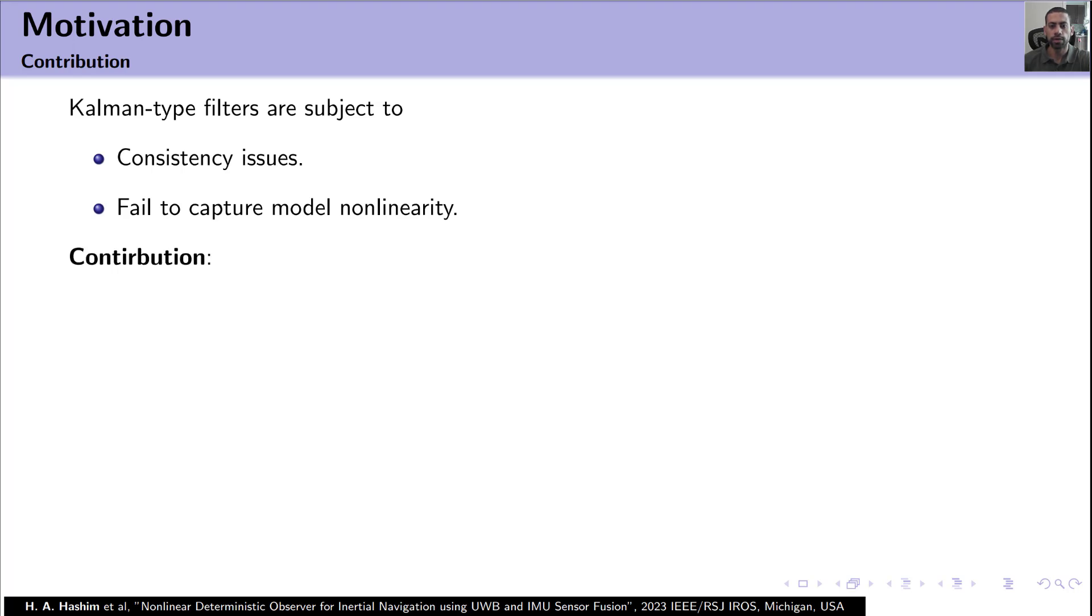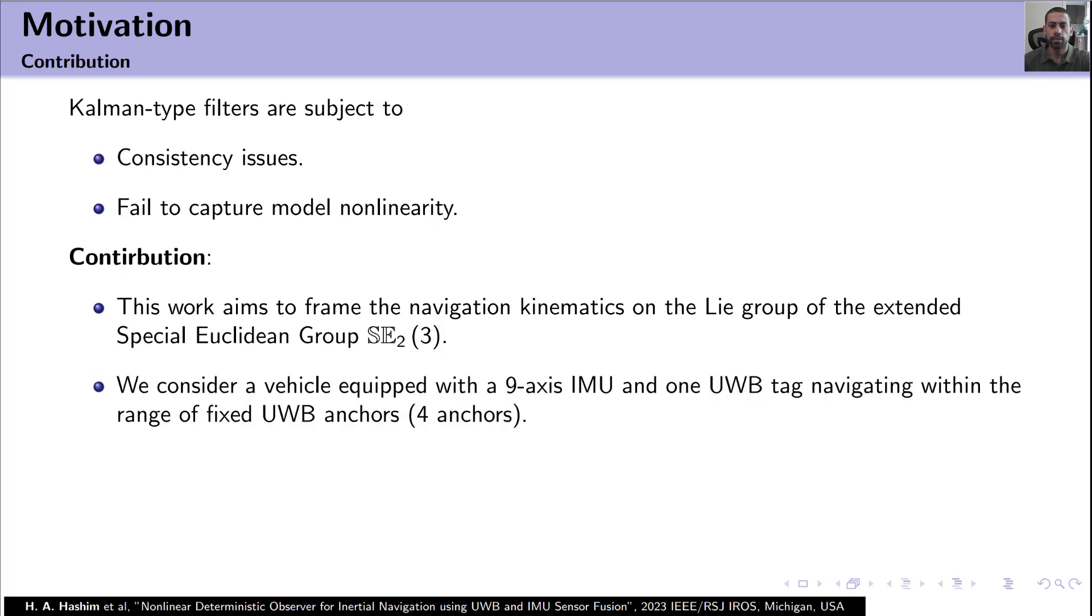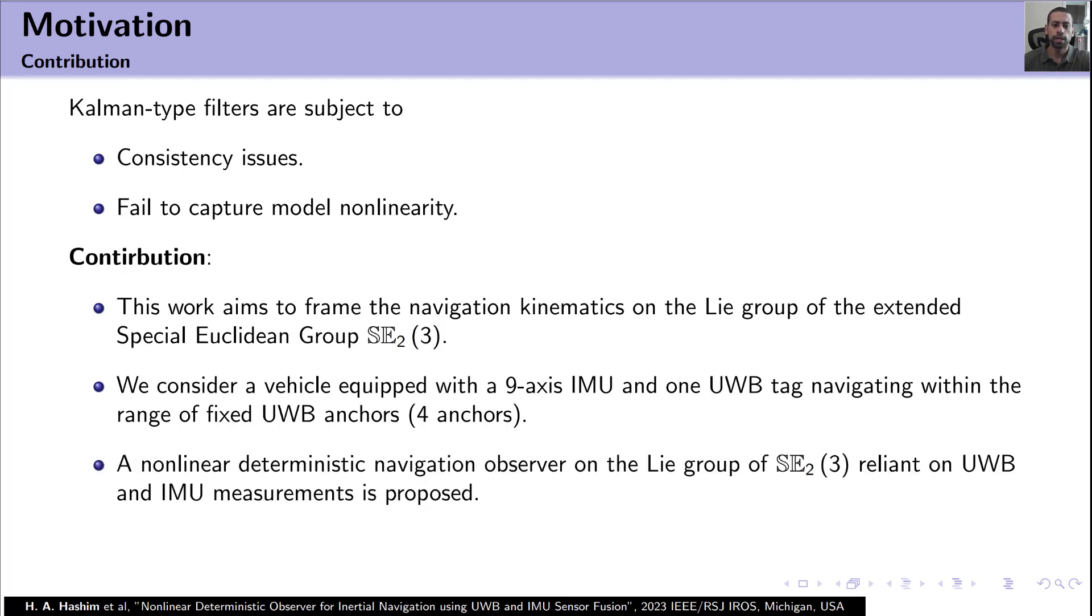This is why the contributions of this work are as follows. The work aims to frame the navigation kinematics on the Lie group of the extended special Euclidean group SE_2(3). In this work, we consider a vehicle equipped with 9-axis IMU and one UWB tag navigating within the range of at least four fixed UWB anchors. We propose a nonlinear deterministic navigation observer on the Lie group of SE_2(3) which relies on the measurements of ultrawide band plus the inertial measurement unit, and the proposed observer successfully solves for the unknown bias which is present in the IMU measurements.